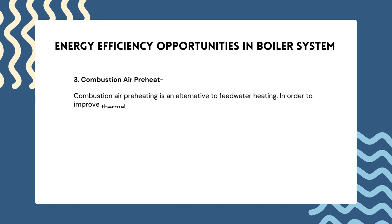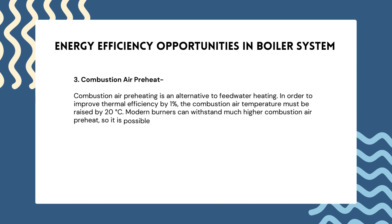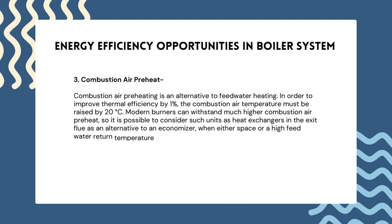For a modern 3-pass shell boiler firing natural gas with a flue gas exit temperature of 140°C, a condensing economizer could be used. Third, combustion air preheat: combustion air preheating is an alternative to feed water heating. To improve thermal efficiency by 1 percent, the combustion air temperature must be raised by 20°C. Most gas and oil burners in boiler plants are not designed for high air preheat temperatures, though modern burners can withstand much higher combustion air preheat.